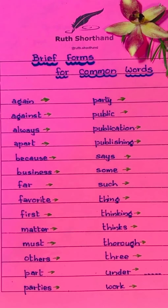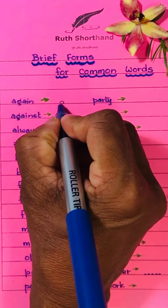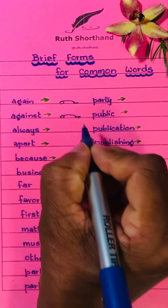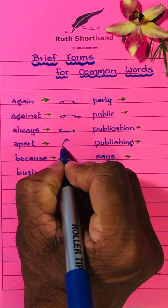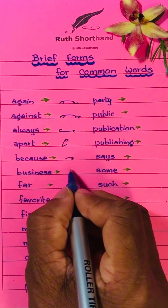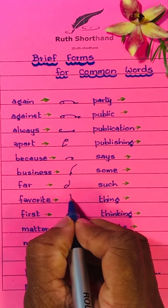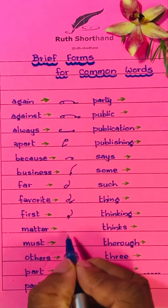There are so many brief forms for common words. Today we will learn about some brief forms: here, again, against, always, apart, because, business, for, favorite, first, matter.